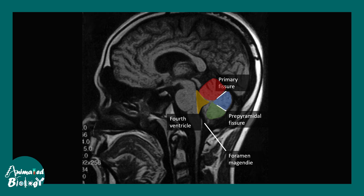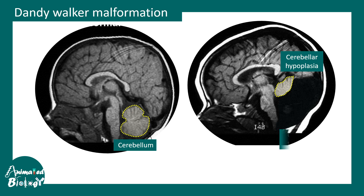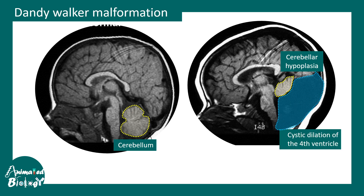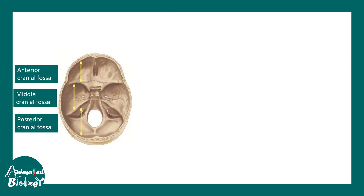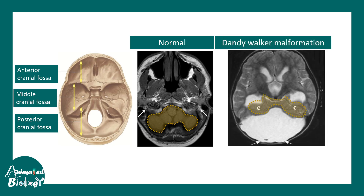This is the foramen magnum. In Dandy-Walker malformation there is a small or hypoplastic cerebellum. You can see there is a cystic dilation of the fourth ventricle. Looking at the posterior fossa from a horizontal view, one can see the cerebellum and appreciate the hypoplastic cerebellar vermis along with the huge dilated fourth ventricle, which has pushed away the posterior fossa.